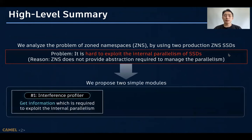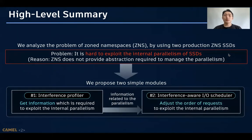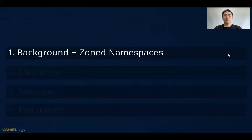To solve this problem, we propose two simple modules. The first module named Interference Profiler gets information required to exploit the internal parallelism. Then, based on this information, our second module named Interference-Aware IO Scheduler adjusts the order of requests to exploit the internal parallelism. Now, let's move on to the main talk, and firstly, let's go over what the ZNS is.